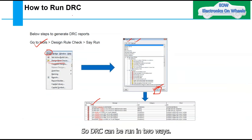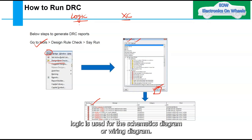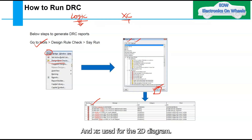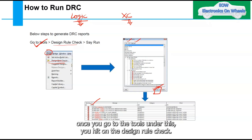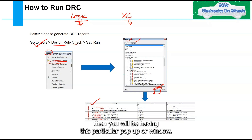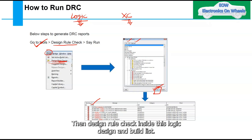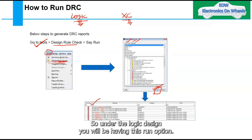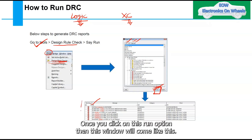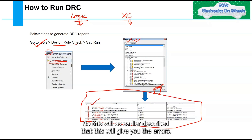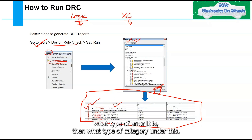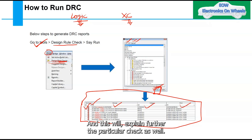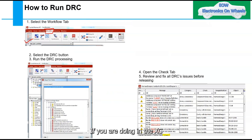DRC can be run in two ways — from Logic or from XC. Logic is used for schematic or wiring diagrams, and XC is used for 2D diagrams. For Logic, go to Tools, click on Design Rule Check, and a window will appear. Under 'Logic Design and Build List,' click the Run option. The DRC results window will show errors with category, check type, and a detailed explanation.